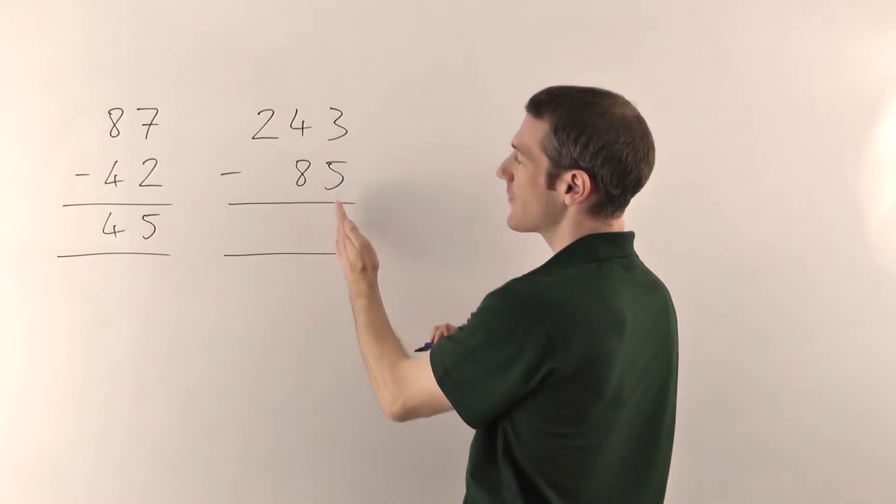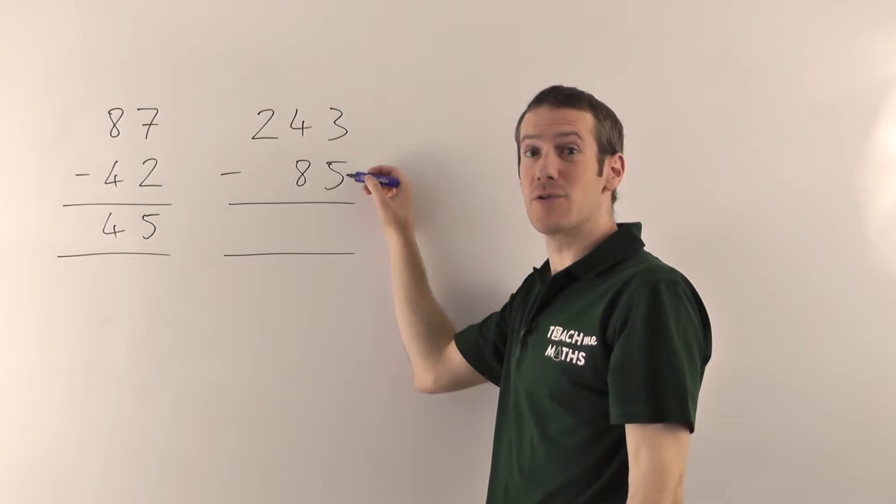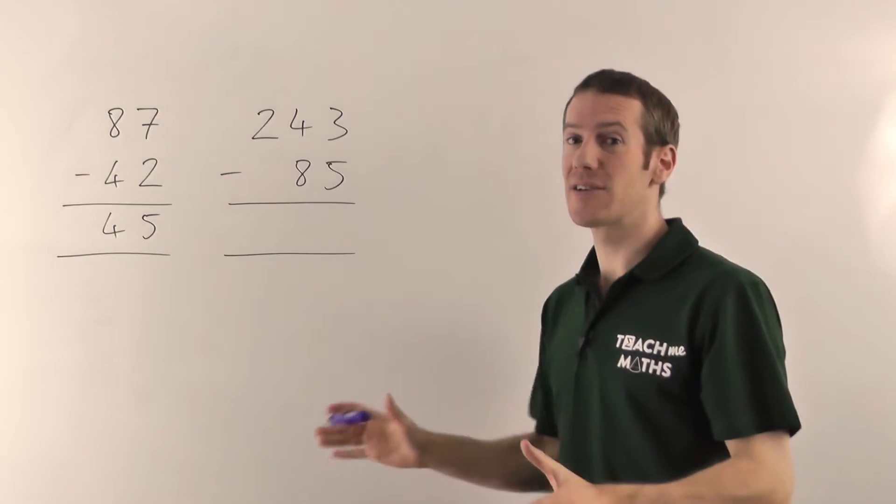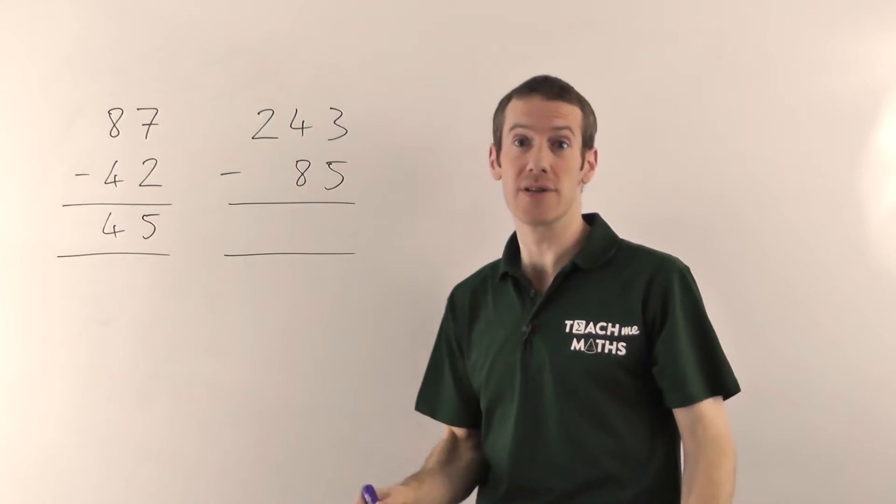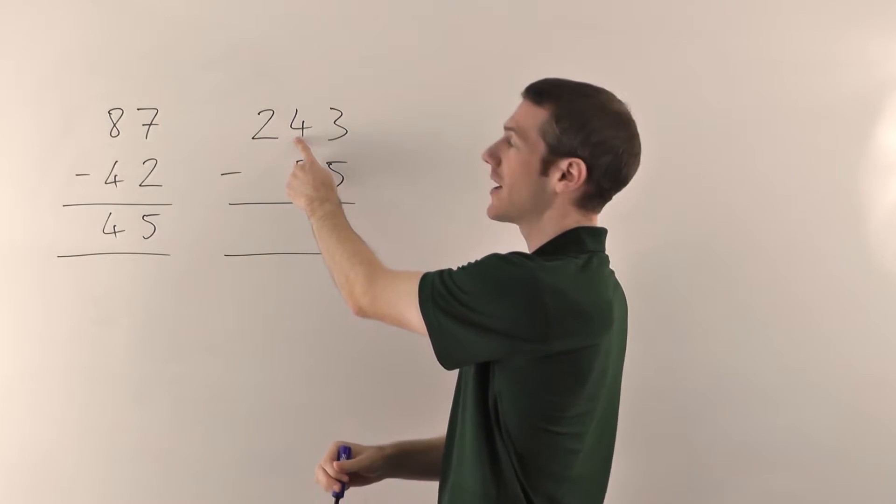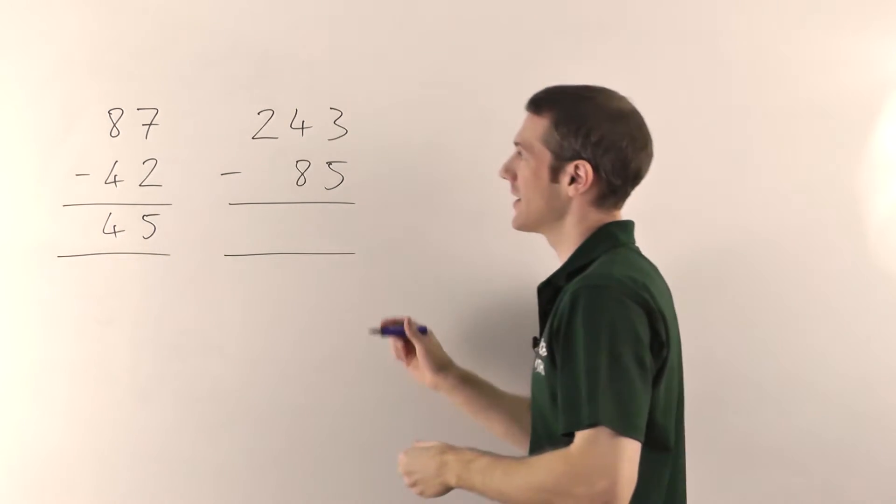Okay, so we're going to subtract from the right, so it's 3 minus 5, but you can't do that because the 5 is too big. So what we have to do here is just use a trick. That's all it is, a little trick which allows you to then do the subtraction. You're going to borrow from the 4. Now I'm going to show you how to do this first and then I'll explain why it works.